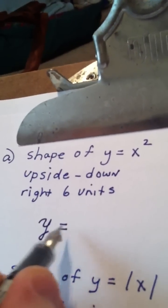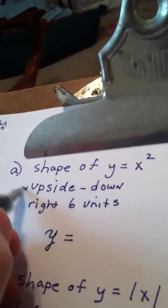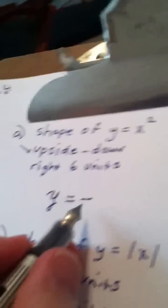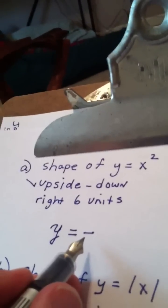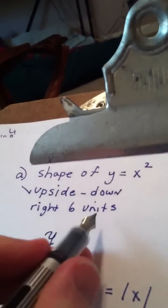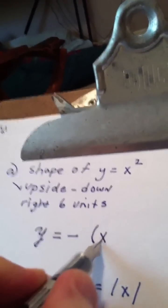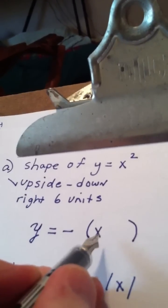y equals, upside down is going to be taken care of by starting it off as the opposite of, that's going to turn the graph upside down, right six units. We're going to have inside parens. Now, this is where it gets a little tricky.